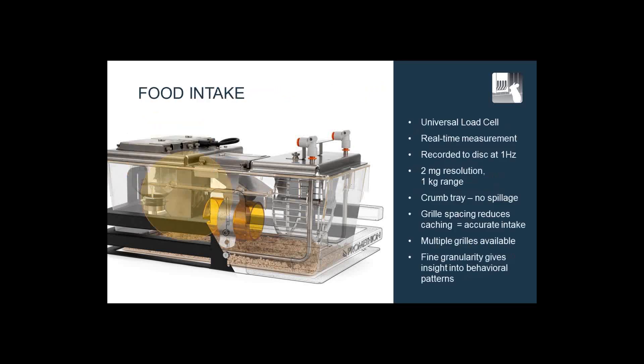So let's look at food intake. This uses the load cell for real-time measurement, and a good system should be able to record all of the information to disk at a reasonably high frequency. We record everything from the entire system at one hertz, and the resolution in terms of mass is about two milligrams — 0.002 grams resolution over a one-kilogram range. The food hopper has a crumb tray so there's no spillage involved, and we have variable grill spacings, which are important for different kinds of diets such as high-fat diet and conventional chow. The grills are actually interchangeable to reduce caching to the extent possible.